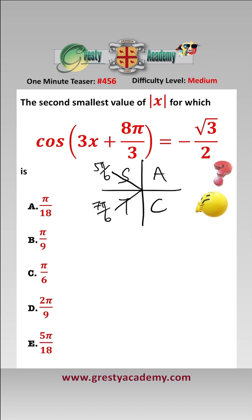And that gives us two general solutions: either 3x add 8 pi over 3 is equal to 5 pi over 6 add 2 pi n, or 3x add 8 pi over 3 is equal to 7 pi over 6 add 2 pi n.